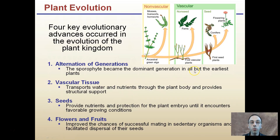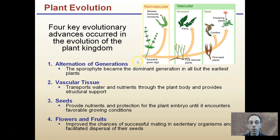There are four key evolutionary advances that occurred in the evolution of the plant kingdom. First is the alternation of generations. This is where the sporophyte, the diploid component of the life cycle, became the dominant generation in all but the earliest of plants — those being closest in descent to green algae.